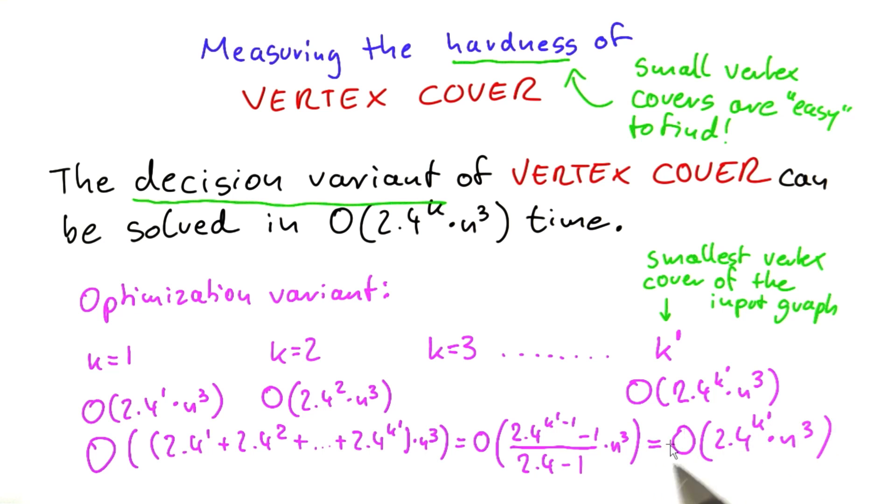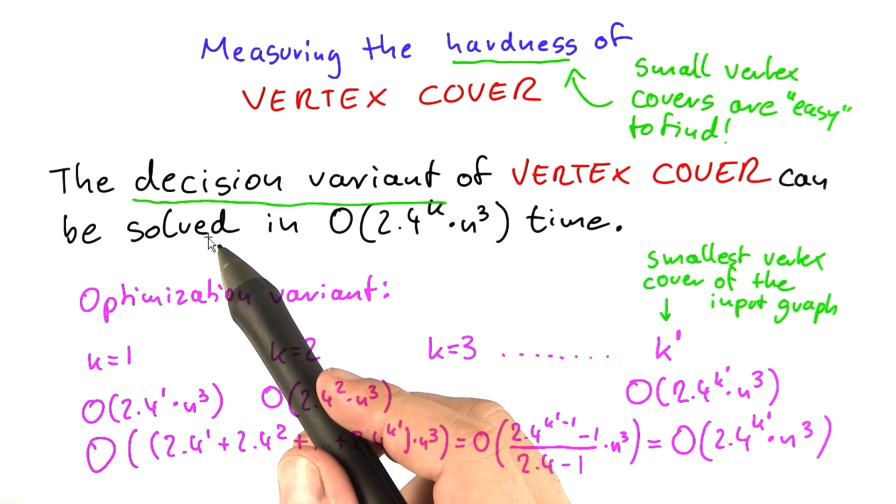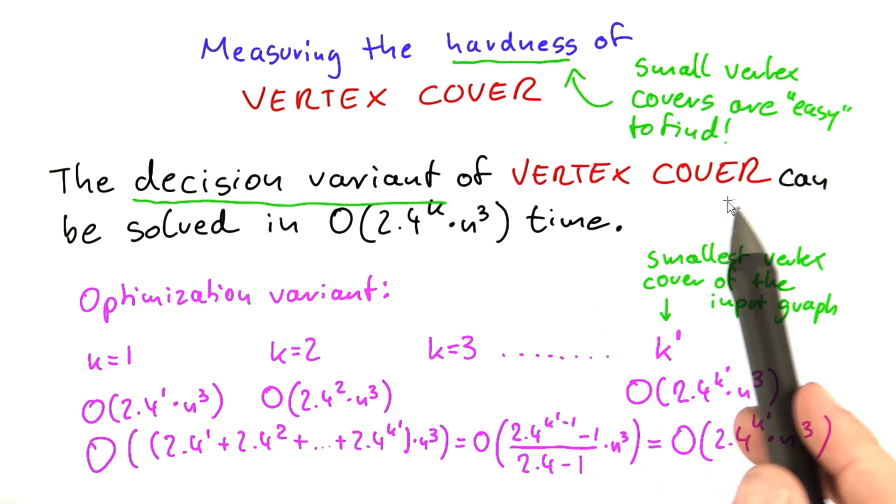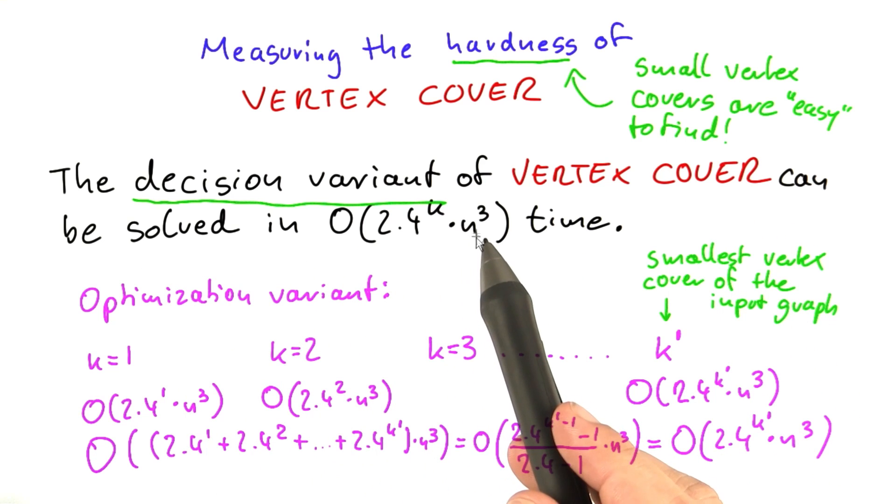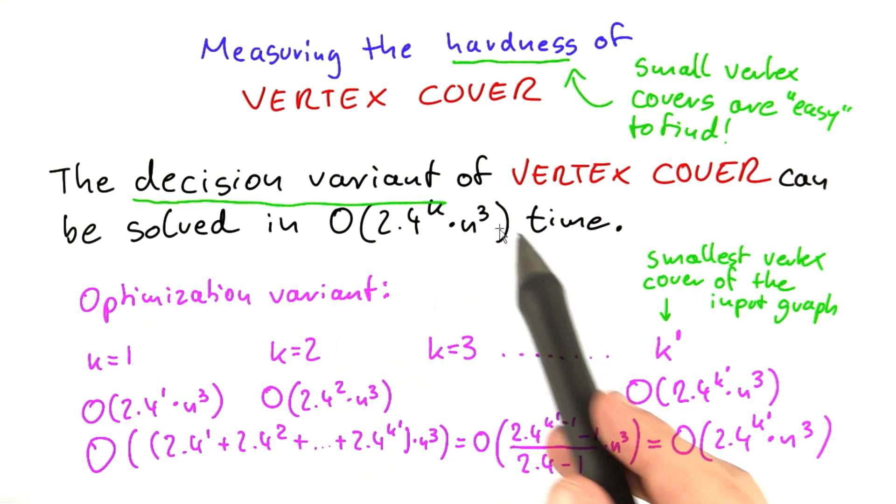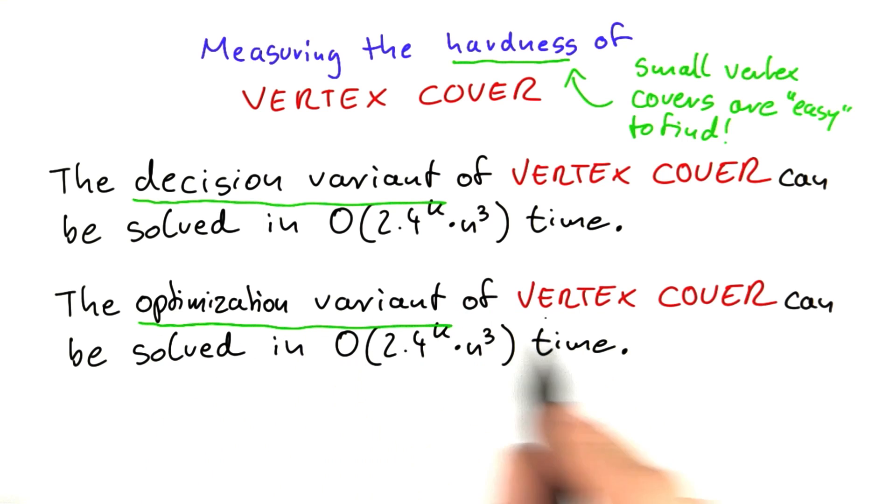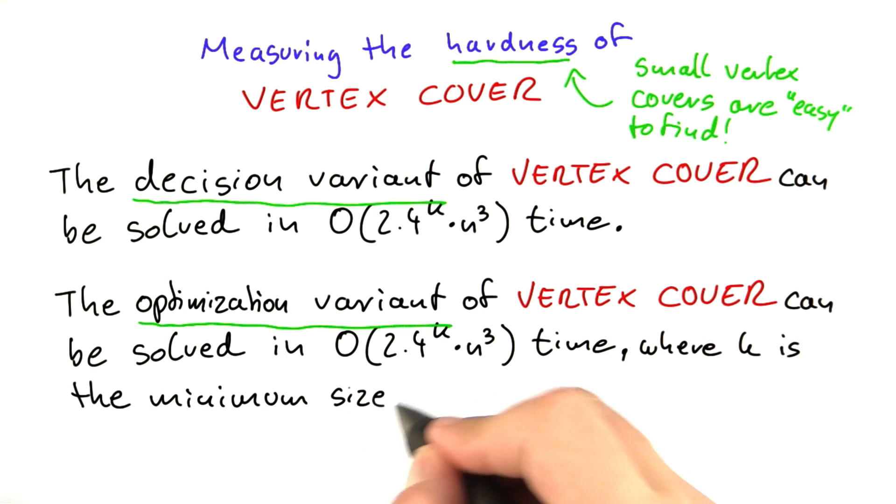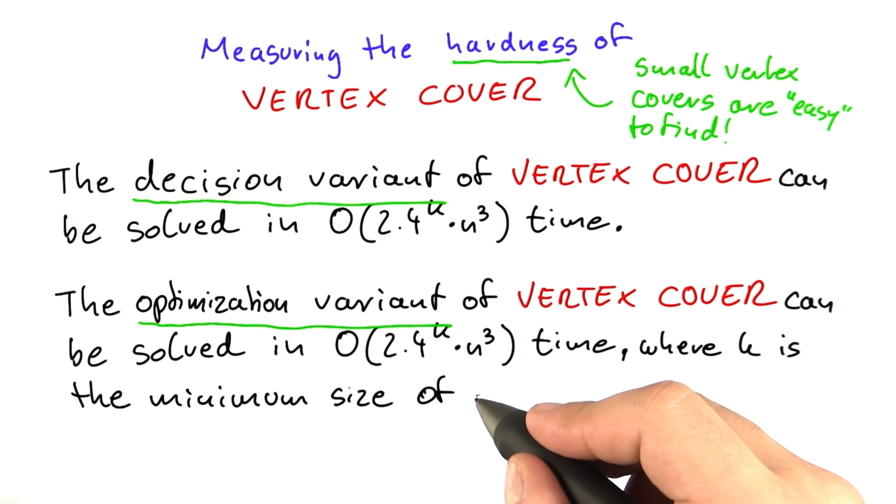This is amazing because now it means that not only the decision variant of vertex cover can be solved in 2.4^k × n^3 time, but the optimization variant of vertex cover can also be solved in O(2.4^k × n^3) time, where k is the minimum size of a vertex cover for the input graph.